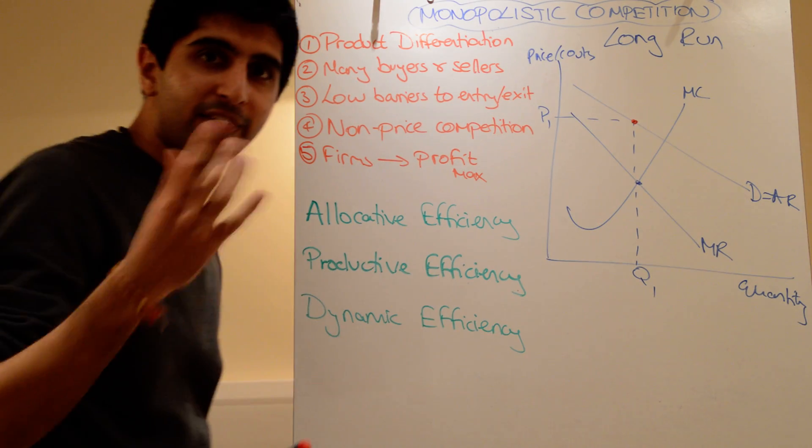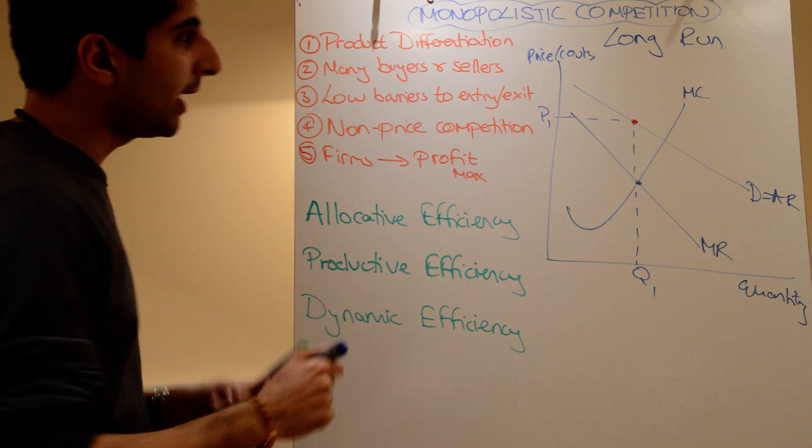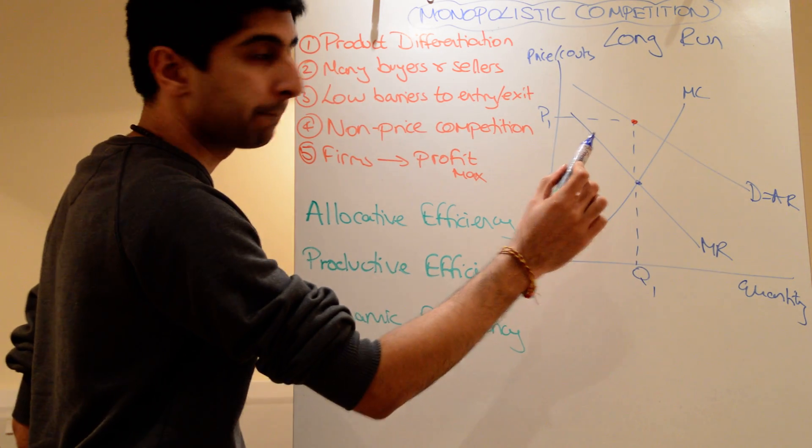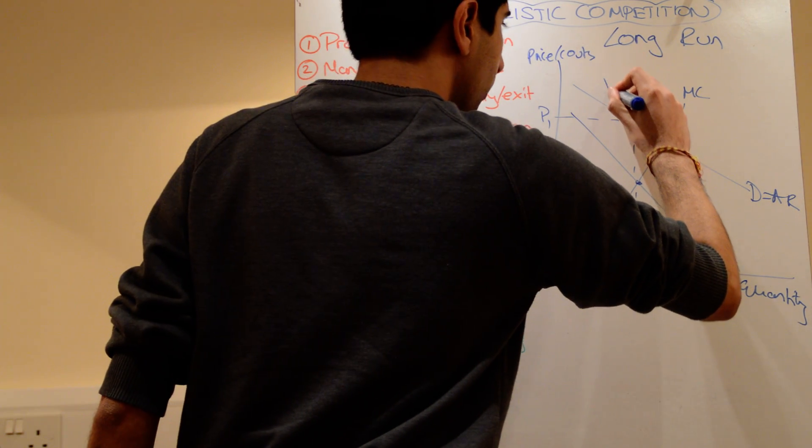So once we've done these things, then you draw your average cost. But make sure it touches, it's tangential to this red point there. So that's a bit fiddly, but get it done properly.